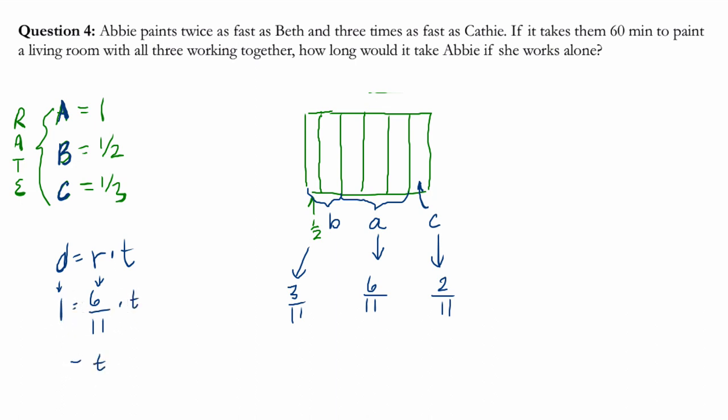You multiply both sides by eleven-sixths, and that's the answer. Eleven-sixths of an hour, which is one and five-sixths of an hour, which is one hour and fifty minutes. So that was a really clever approach on this problem. Thank you.